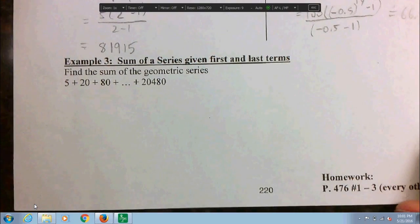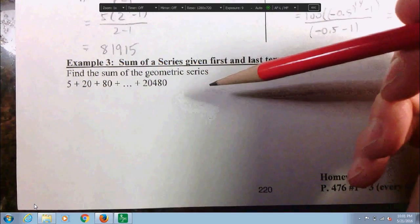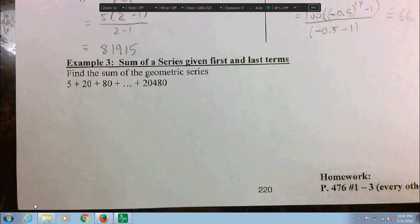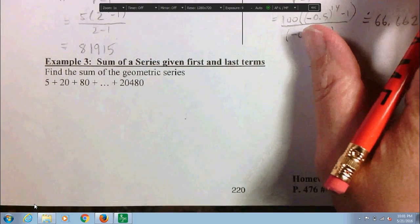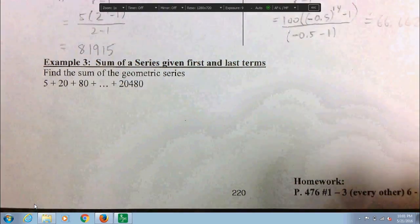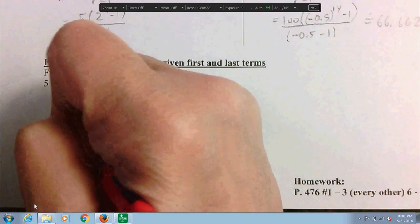Example three is similar to examples that we've seen before where they ask you for the sum of the series but we don't know how many. So what do we do? We do the same thing we did for arithmetic sequences and geometric sequences. We have to calculate the n so that we can put it into the sn formula.